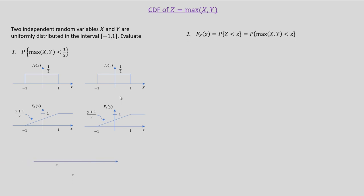To understand this, let us take a simple real line example, where we have chosen x and y such that they are less than the value z. For one case, max of x comma y would be equal to y, and for the second case when x and y are interchanged, max of x comma y would be equal to x. So for both cases, to satisfy max of x comma y being less than z, what is required is that both x and y should be less than z.